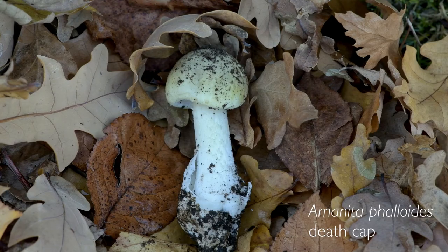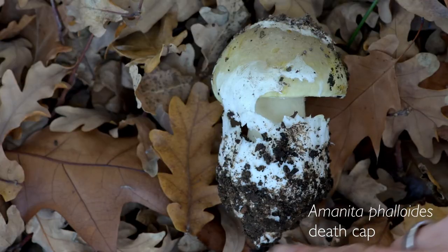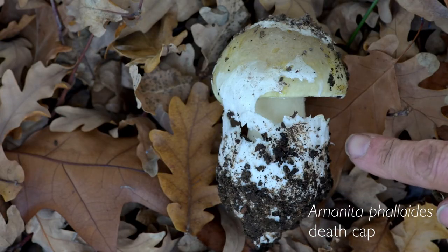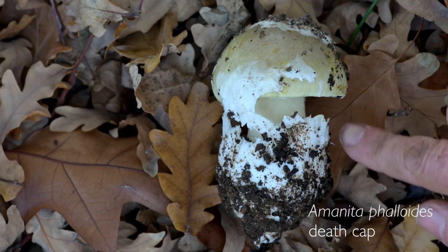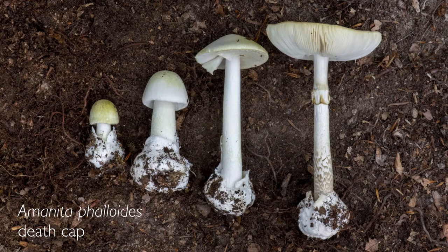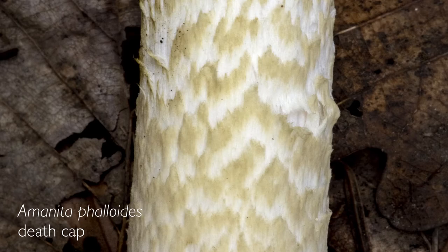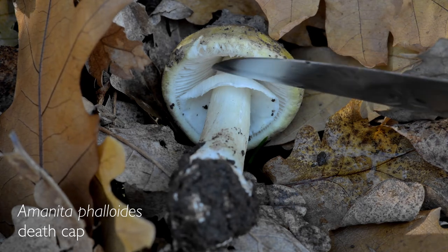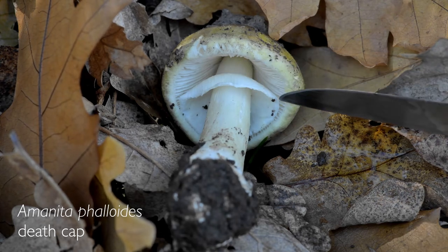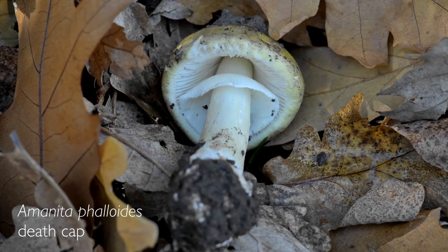The stipe is generally equal in diameter along its length, with a prominent bulbous base contained within a sac-like membranous volva. The stipe is typically white, or tinged yellowish-green, sometimes with zigzag banding. Also note the white membranous partial veil that forms a skirt-like annulus on the upper stipe.